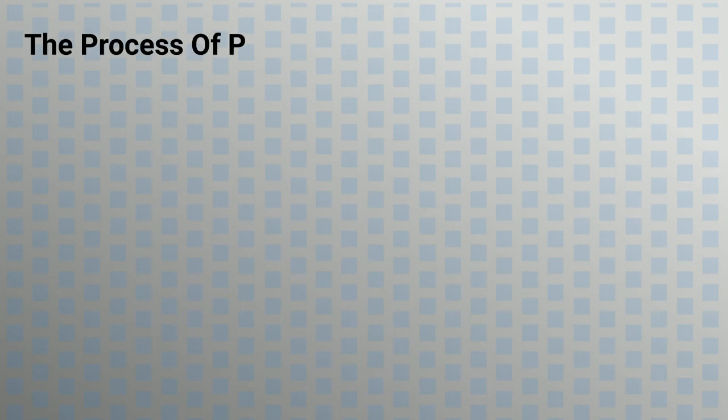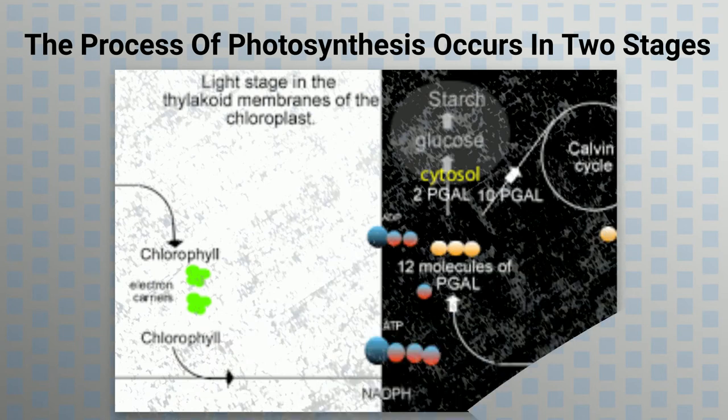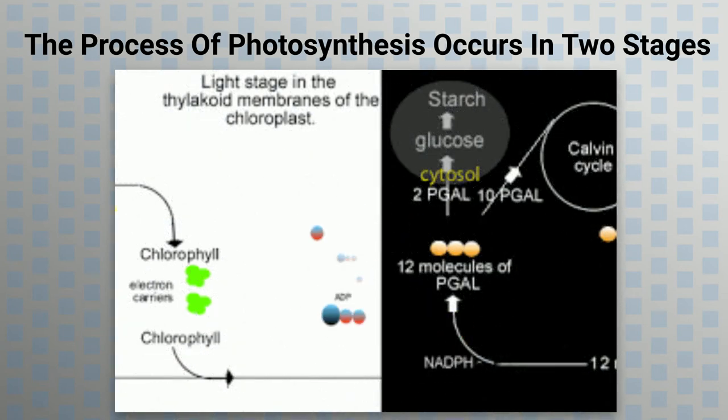This process of photosynthesis occurs in two stages: light dependent reaction or light reaction, and light independent reaction or dark reaction.